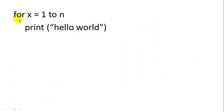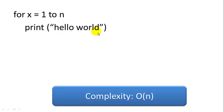Let's apply big O analysis to some simple programs. If we look at a for loop that runs from 1 to n, the print statement will execute n times, once for each number in the for loop. So the complexity of this algorithm is big O of n.